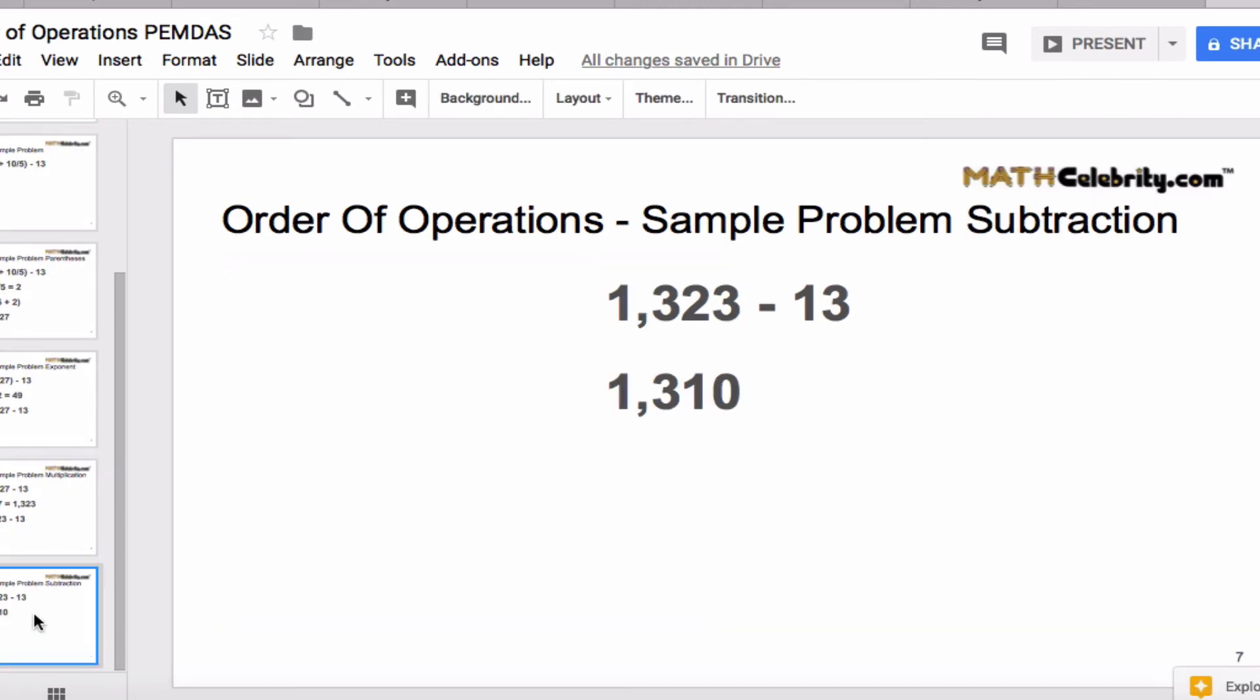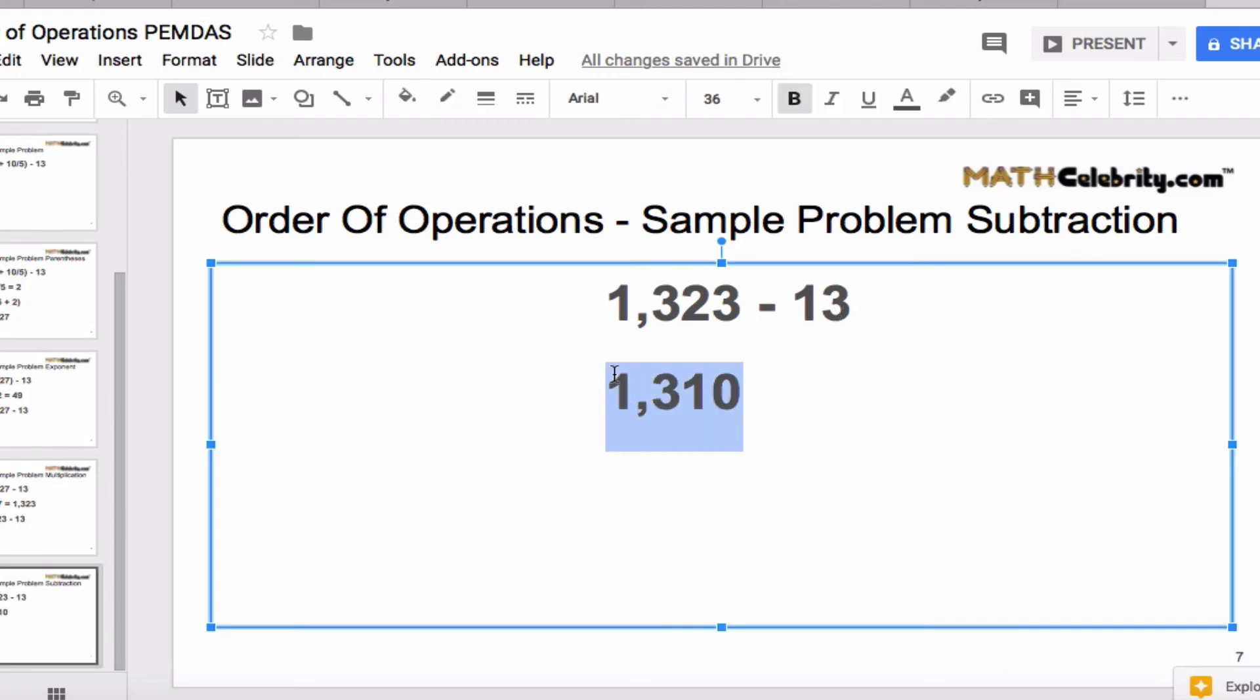And finally, let's bring this problem home. S stands for subtraction. So we want to take 1,323 minus 13 and we get 1,310 as our final answer.